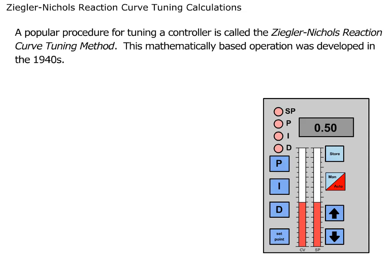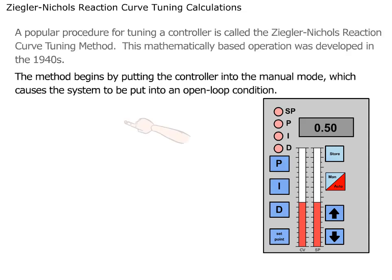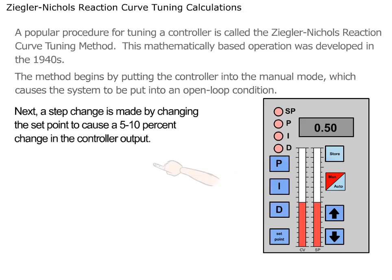This mathematically-based operation was developed in the 1940s. The method begins by putting the controller into the manual mode, which causes the system to be put into an open-loop condition.